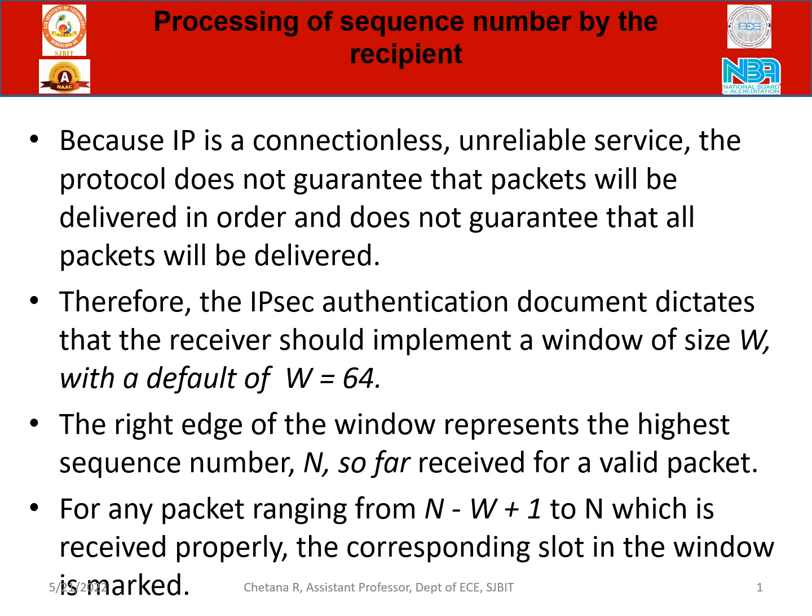The IP security authentication document dictates that the receiver should implement a window of size W, with the default of W equal to 64. A window should be there. Immediately, one packet comes and falls inside this window, which has a maximum limit of 64 packets it can receive — it should give an acknowledgement. So the right edge of the window represents the highest sequence number N so far received for a valid packet. For any packet ranging from N minus W plus 1 to N which is received properly, the corresponding slot in the window is marked.